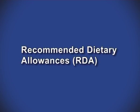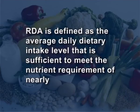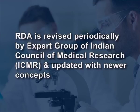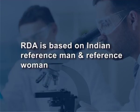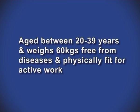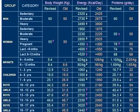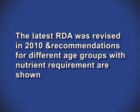RDA (Recommended Dietary Allowances) is defined as the average daily dietary intake level sufficient to meet the nutrient requirement of nearly all healthy individuals — 97 to 98 percent — in a particular life stage and gender group. RDA is revised periodically by the Indian Council of Medical Research (ICMR) and is based on an Indian reference man and reference woman. The reference man is aged 20–39 years, weighs 60 kg, and is free from disease and physically fit. The reference woman is aged 20–39 years and weighs 55 kg. The latest RDA was revised in 2010.